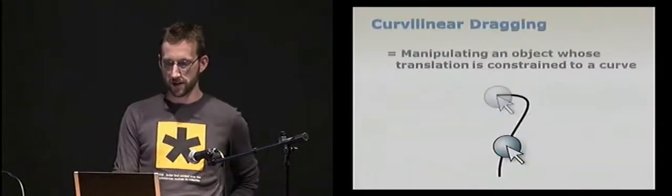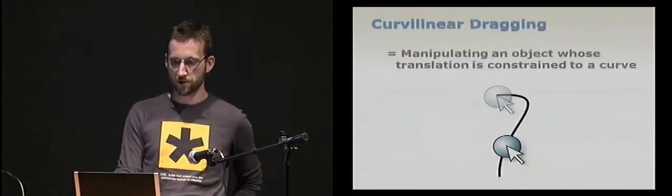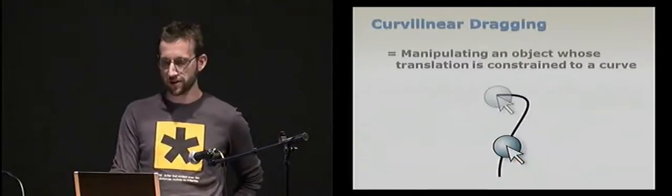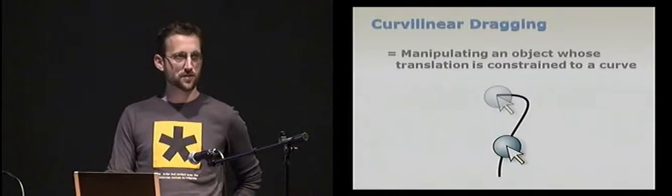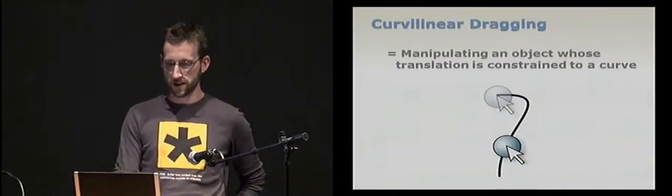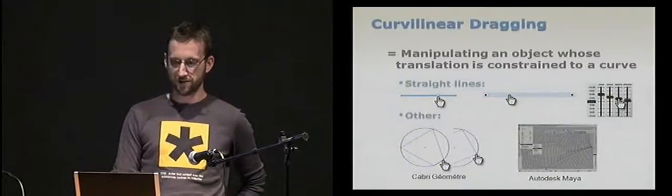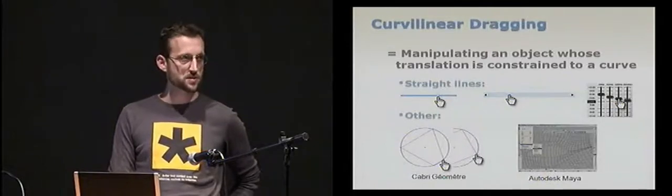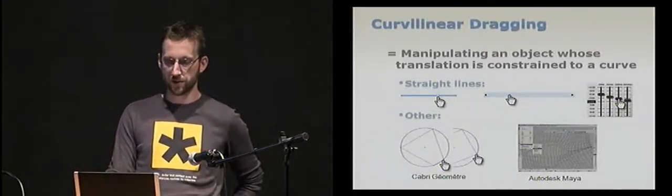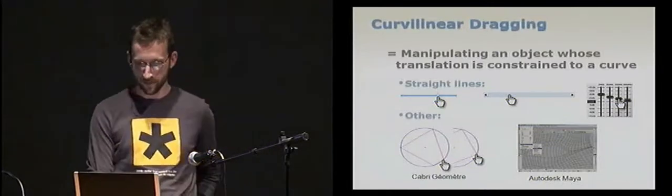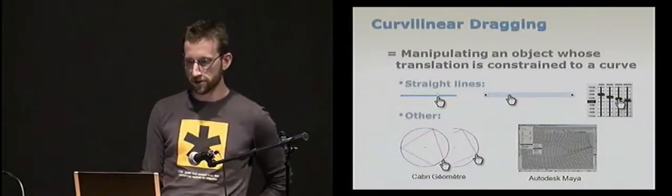So one interesting example of this is what we call curvilinear dragging. Curvilinear dragging involves mapping mouse drags to the translations of an object on a curve. And we use that almost every day, mostly on straight lines, but there are also some applications which make use of curvilinear dragging on non-straight curves.